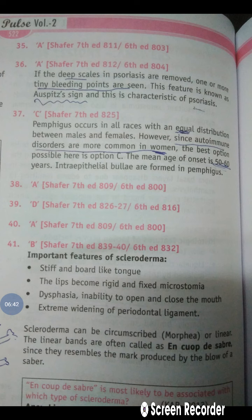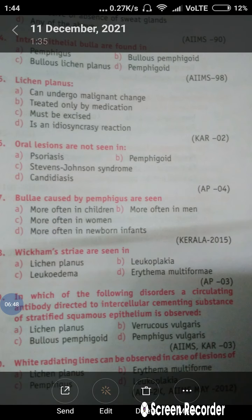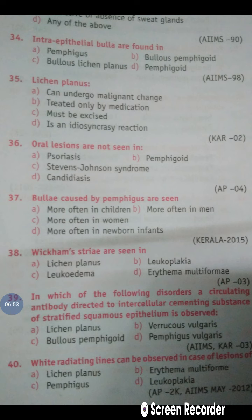Question number 38: Wickham Striae. You should learn this by heart — Wickham Striae is the basic characteristic feature of oral Lichen Planus. If it is a case of oral Lichen Planus, you are definitely going to see Wickham Striae. That's why option A is correct.